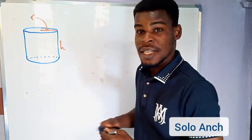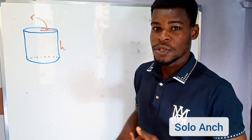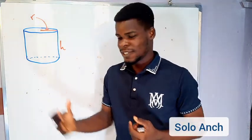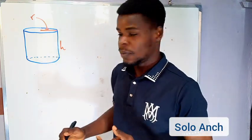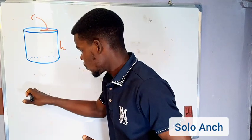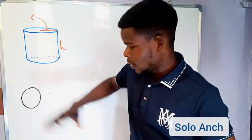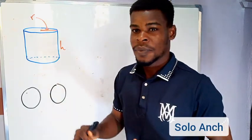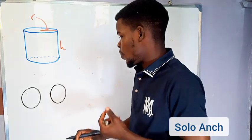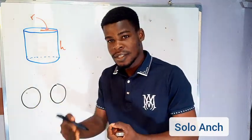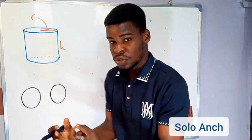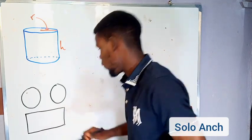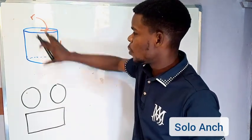We can find it easily by disassembling the cylinder. Think about a tin of Pick milk. When you look at it, the top is a circular shape, and the bottom is also circular. Then take out the top, take out the bottom, and cut the lateral part. When you stretch it open, you observe that a rectangle is formed.